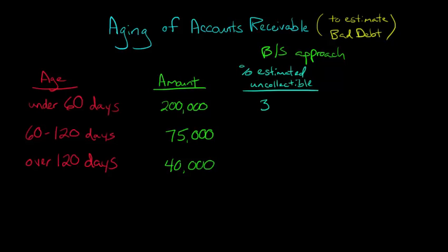So we'll estimate for this, let's say historically we say, you know, if it's just been under 60 days, only 3% of the time is it actually uncollectible. But if it's between 60 and 120 days, maybe at that point we say, oh, well, 10% chance it'll be uncollectible. And if it's over 120 days, if someone hasn't paid in that long, maybe we estimate 30%.